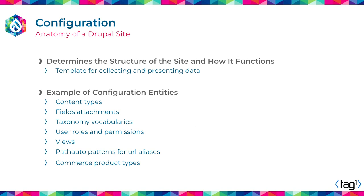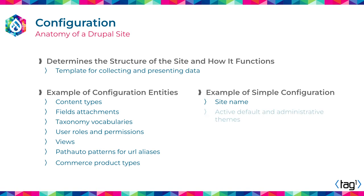The second group of configuration is called simple configuration. Your site name is something that Drupal stores in the database and then you export to code files. The theme that end users are going to see, and in the backend the editors are going to interact with to enter content into the website — that is also configuration. And all the modules that you have, whether it is 10, 20, or 100 — the state of being enabled or disabled — that is configuration.